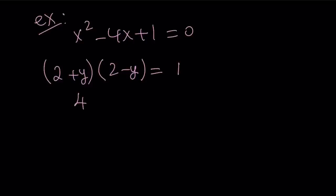This gives us 4 from difference of two squares. 4 minus y squared equals 1. That means y squared equals 3. You can also look at it as 4 minus 1.